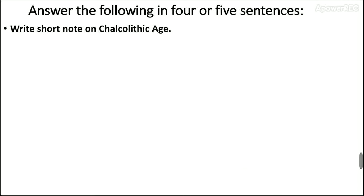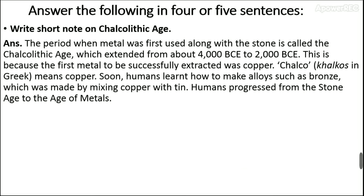Write a short note on the Chalcolithic age. The period when metal was first used along with stone is called the Chalcolithic age, which extended from about 4000 BCE to 2000 BCE. The first metal to be successfully extracted was copper — 'chalcos' in Greek means copper. Soon, humans learned how to make alloys such as bronze, which is made by mixing copper with tin. Humans progressed from the Stone Age to the age of metals.